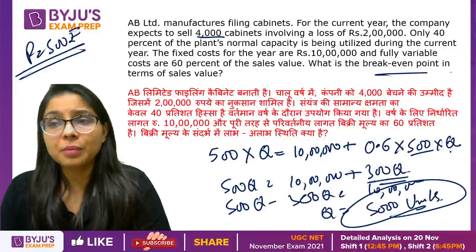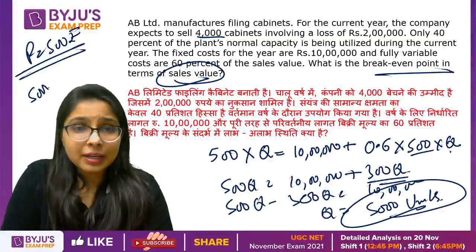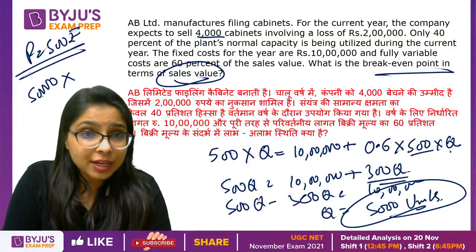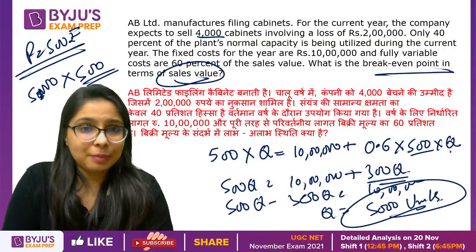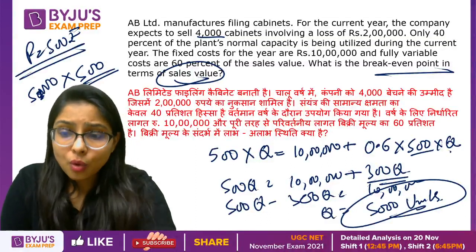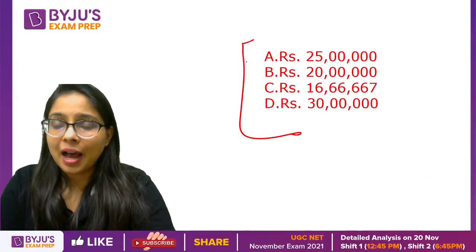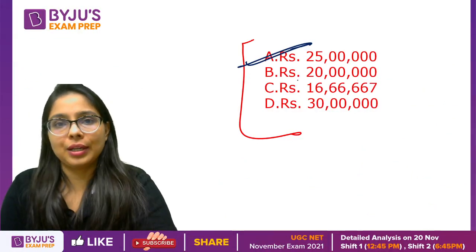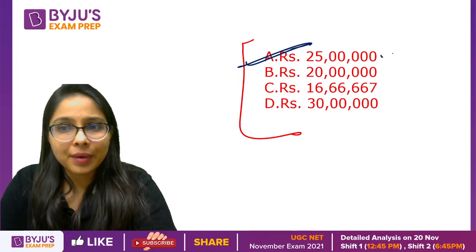What is the break-even point in terms of sales value? In sales value, you need: 5,000 units at 500 rupees each. When you do the calculation, the correct answer is option A — 25 lakh rupees is your correct answer.